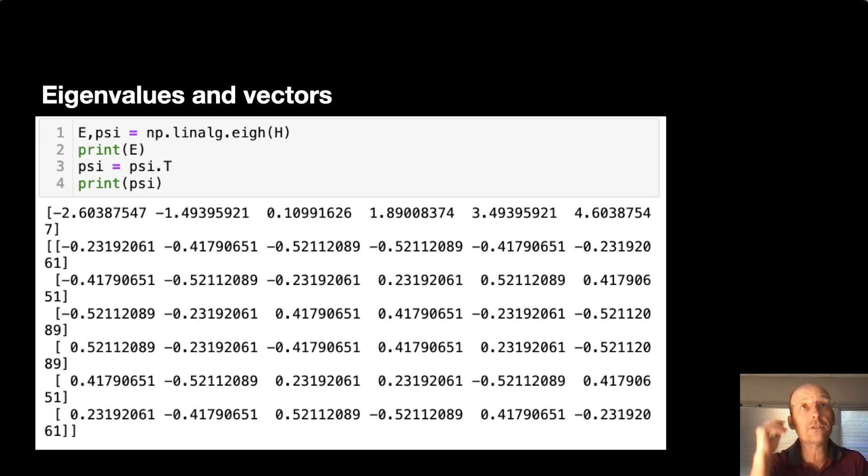How do you find eigenvalues and eigenvectors? Really easy. Use this linalg.eigh function in NumPy. So you give it your matrix right there, H, and then it returns the energies E and the wave functions, the vectors, the eigenvectors. And I called it psi.